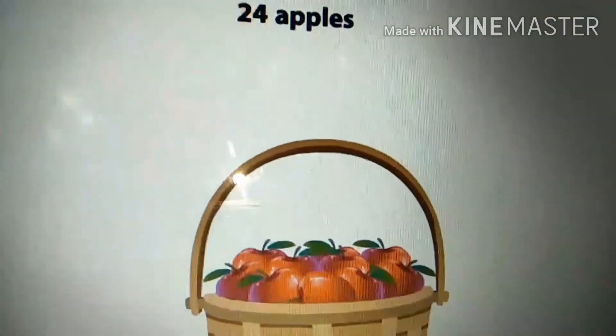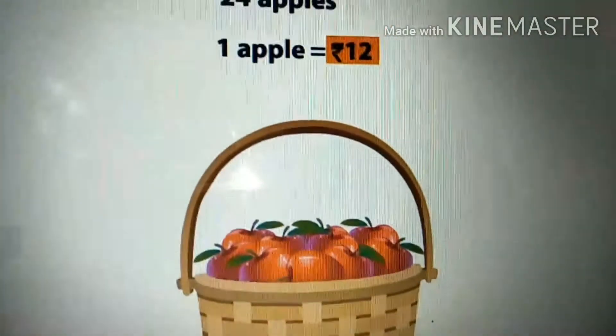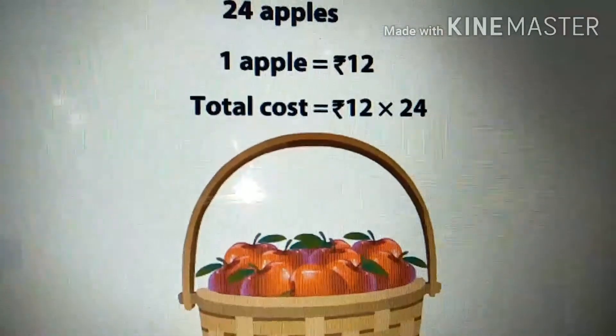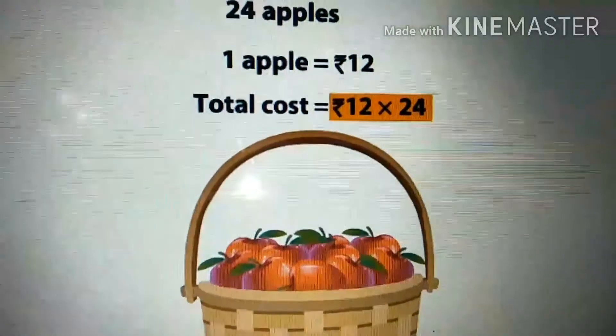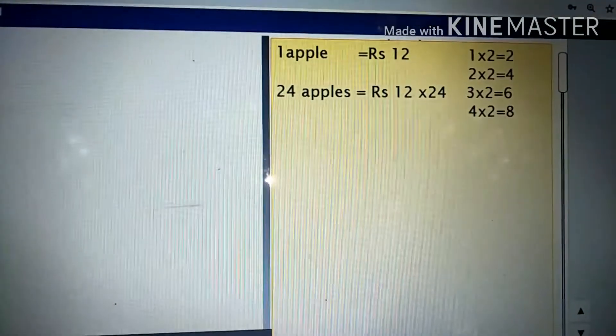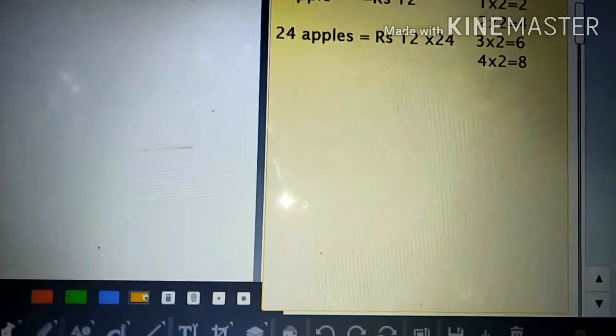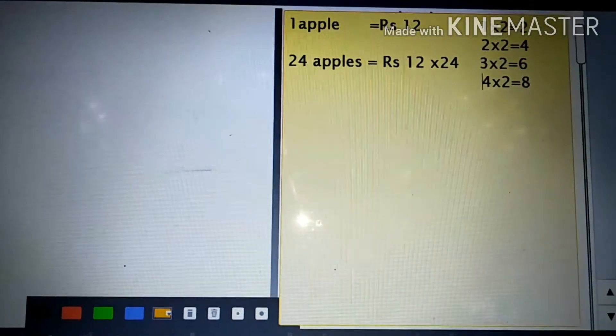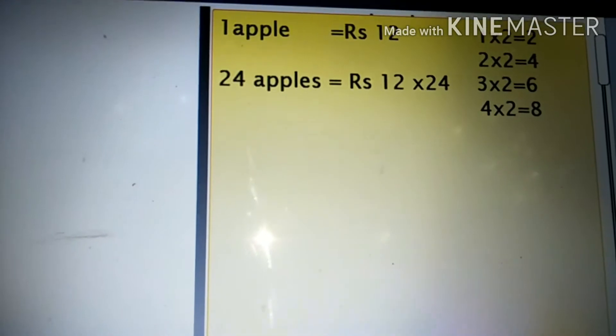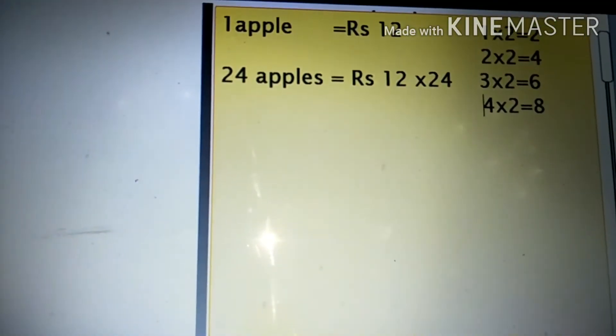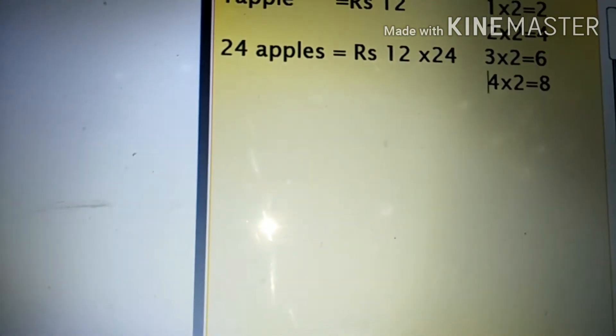Look here. 24 apples, each one costs 12 rupees. So the total cost is 12 rupees into 24. First step: arrange the numbers vertically according to the place value. The greater number on top and smaller number below it. Place the multiplication sign between the two numbers.